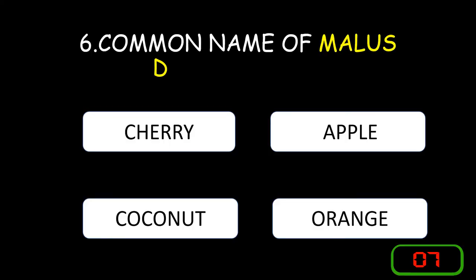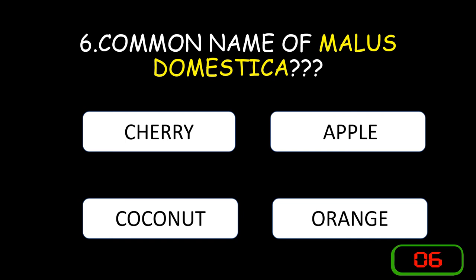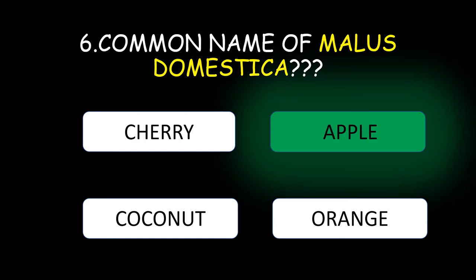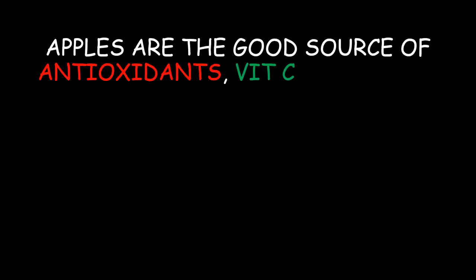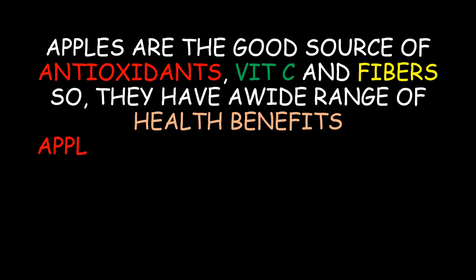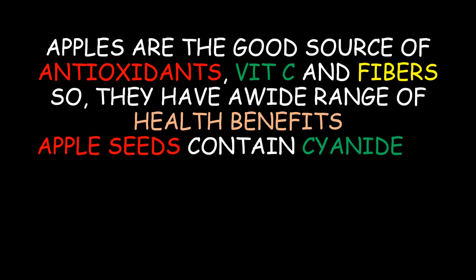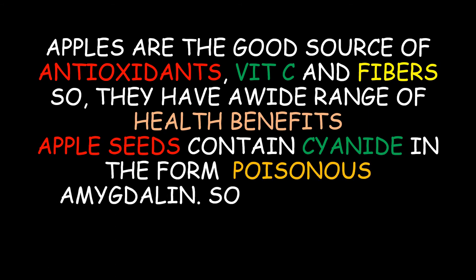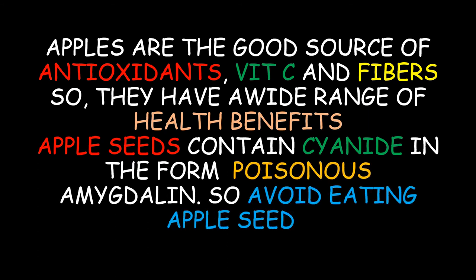The common name of Malus domestica is apple. Apples are a good source of antioxidants, vitamin C, and fiber, so they have a wide range of health benefits. However, apple seeds contain cyanide in the form of the poisonous compound amygdalin, so avoid eating apple seeds.